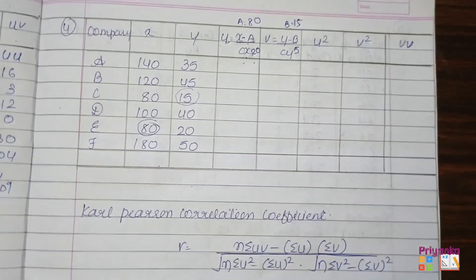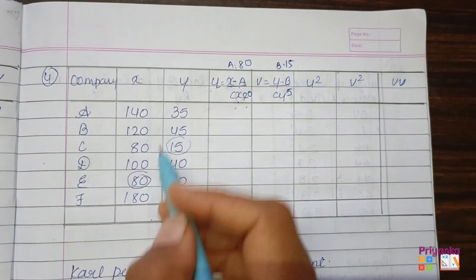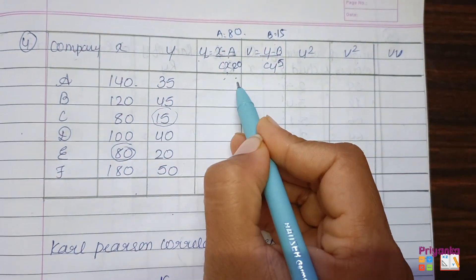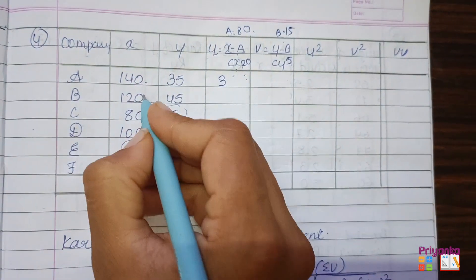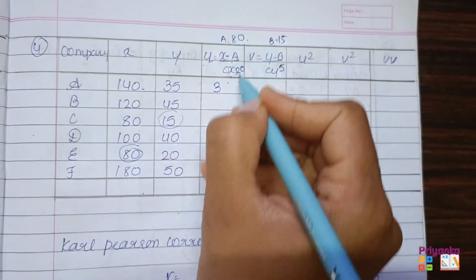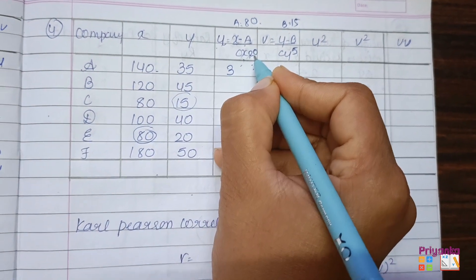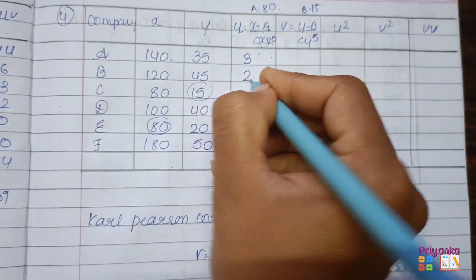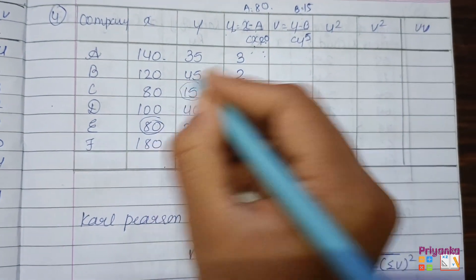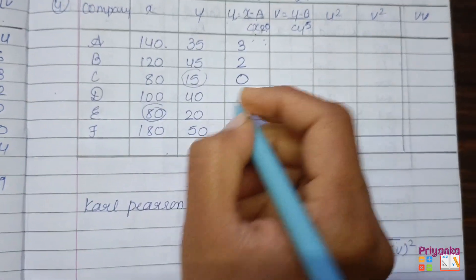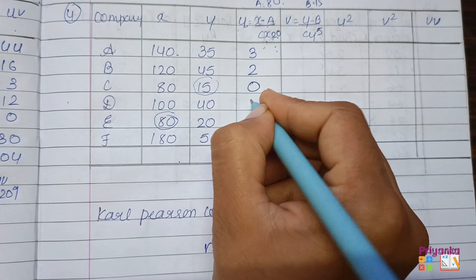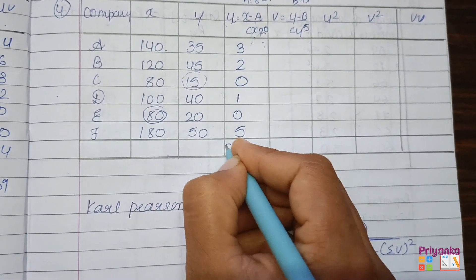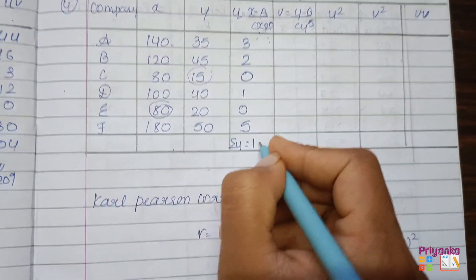Let's make the calculations. 140 minus 80 divided by 20 gives 3. 120 minus 80 divided by 20 gives 2. Continuing with the same pattern: 80 minus 80 is obviously 0, then comes 1, 0, and 5. The total, sigma u, is 12.